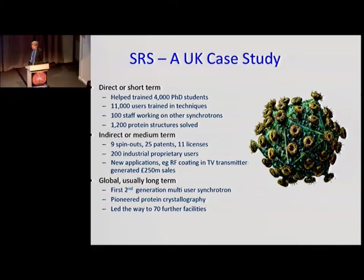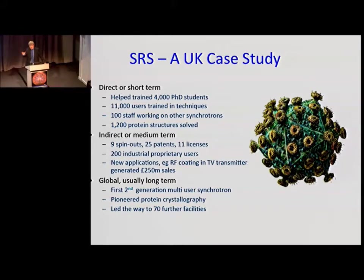The SRS helped train about 4,000 PhD students — every one of them a productive scientist in the economy. There were 11,000 users trained in techniques, much like yourselves — you're now trained technicians and engineers who can go off and do something useful. 100 staff are now working on other synchrotrons, and 1,200 protein structures were solved. A protein structure involves many, many atoms all scattering light in different ways, and using this exquisite form of x-rays you can work out exactly what those structures are.